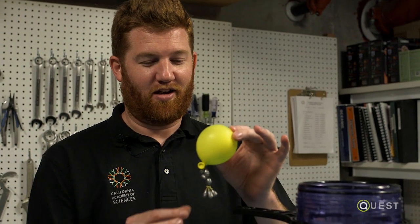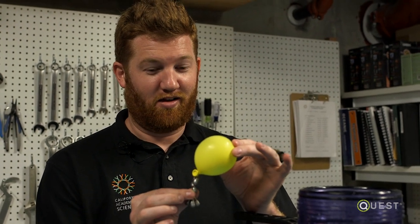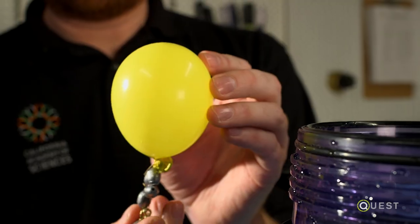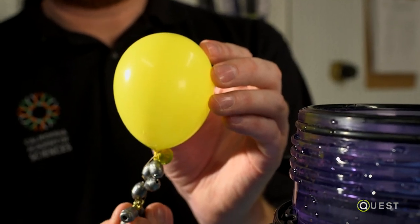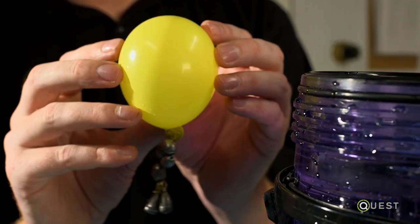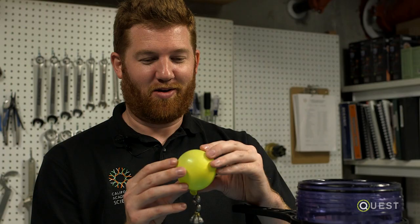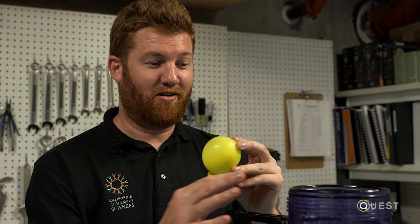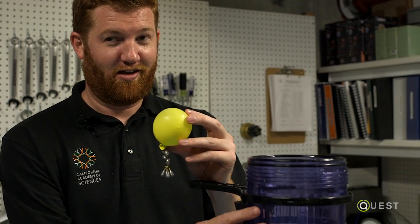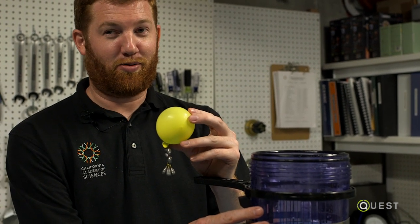Today I'm using this balloon to simulate the swim bladder of a fish, and I've also got some weights attached to it. These are simulating the weight of the fish that normally would drag it down, and in a fish's swim bladder it's filled with gas so that it would keep it neutrally buoyant. So what we're going to do is place it inside of this canister and slowly increase the pressure.